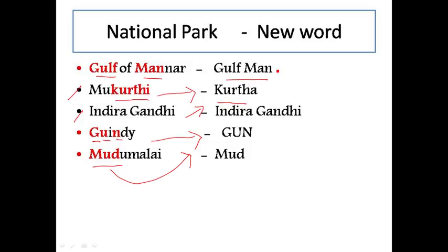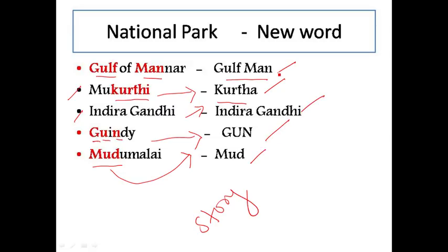Now I am going to frame these five new words into a story. Listen carefully: 'Gulf Man wearing Kurtha shooted Indira Gandhi with Gun. She fell on Mud.' If you remember this sentence, it is easy to remember all the national parks in Tamil Nadu.